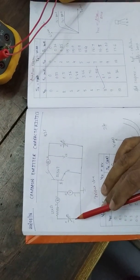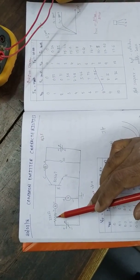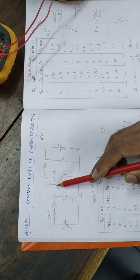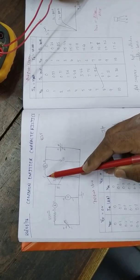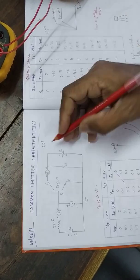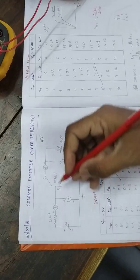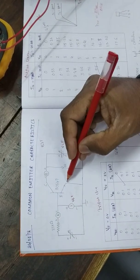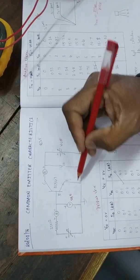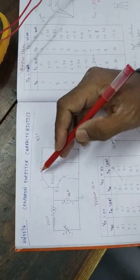Look at this circuit diagram. We have a DC supply positive connected to a 33 kΩ resistor, then we have the base, collector, and emitter terminals. This is your voltage across collector to emitter (VCE) and this is your voltage across base to emitter (VBE). We are going to use common emitter configuration, where the emitter is common to both input and output.